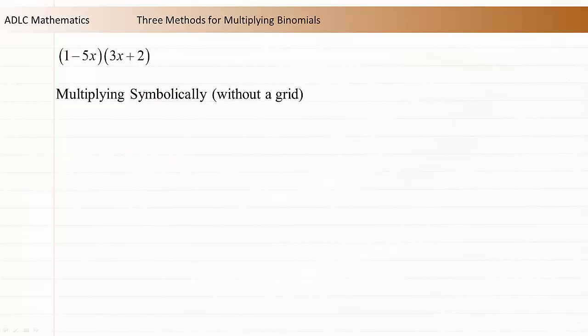The third method we're going to look at for multiplying binomials is multiplying symbolically without a grid. This method usually takes up the least amount of space and time. Many students favor this method as they become more comfortable working with polynomials. Start by writing out the factors of the binomial multiplication.